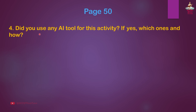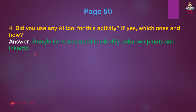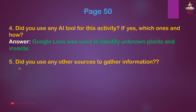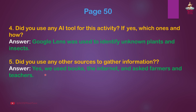Question 4: Did you use any AI tool for this activity? If yes, which ones and how? Answer: Google Lens was used to identify unknown plants and insects. Question 5: Did you use any other sources to gather information? Answer: Yes, we used books, the internet and asked farmers and teachers.